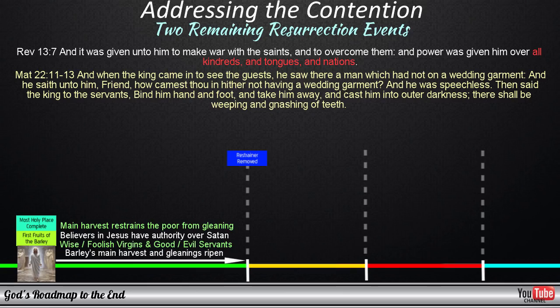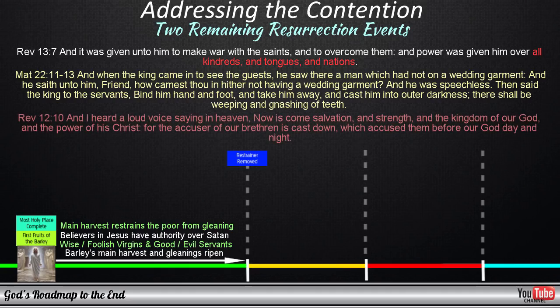Now we know that the evil servants and the foolish virgins are not allowed into the wedding with the bridegroom when he arrives, and are found outside when the door is closed. So who could this person be, and how did he gain entry? The word of God shows us that there is one person who has access to the throne room of God who is not clothed in a wedding garment. This is Satan. And I heard a loud voice saying in heaven, Now is come salvation, and strength, and the kingdom of our God, and the power of his Christ. For the accuser of our brethren is cast down, which accused them before our God day and night. Satan currently has access to the throne room of God and accuses the world before him.